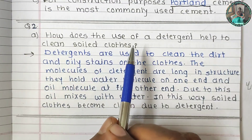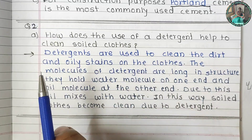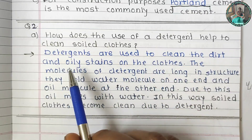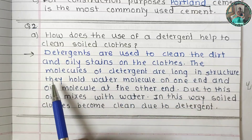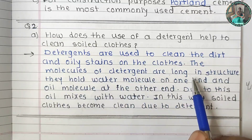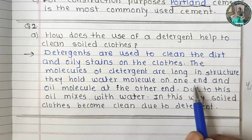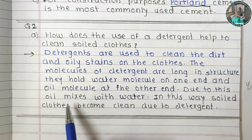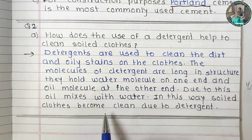How does the use of detergent help to clean soiled clothes? Detergents are used to clean dirty and oily stains on clothes. The molecules of detergents are long in structure. They hold water molecules on one end and oil molecules at the other end. Due to this, oil mixes with the water, and soiled clothes become clean.